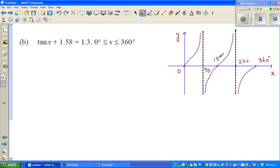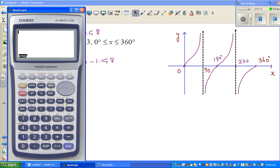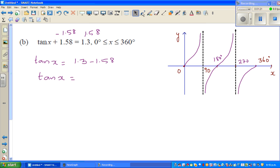Now let us solve this. If you take away 1.58 from this side, tan x is 1.3 take away 1.58. So let me use a calculator: 1.3 take away 1.58, that is negative 0.28. I'm going to do this example in a slightly different way than what I have been doing.